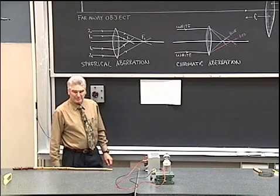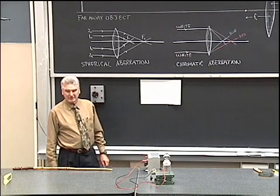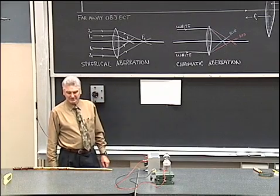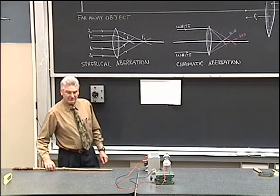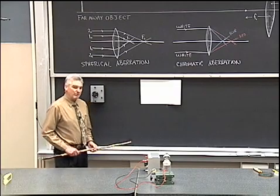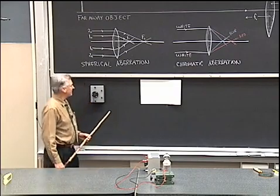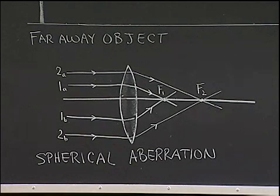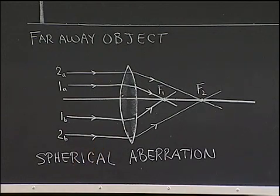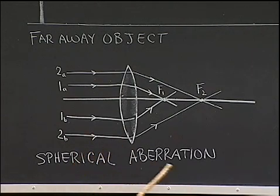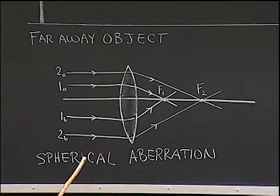Hello. I'd like to discuss and demonstrate various lens defects. These defects are called aberrations. In particular, I have diagrams here for a couple of different aberrations: spherical aberration and chromatic aberration. Let's talk about spherical aberration first.